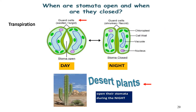Stomata are pores found in the epidermis of the leaf and stem, participating in the exchange of water and gases. The guard cells are responsible for the opening and closing of stomata. Air containing oxygen and carbon dioxide enters the plant through stomata and is used in respiration and photosynthesis. Water vapor is released into the atmosphere through these tiny pores in a process called transpiration. Desert plants open their stomata during nighttime to prevent water loss.